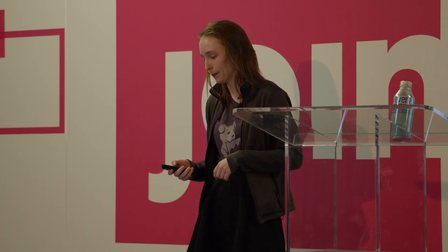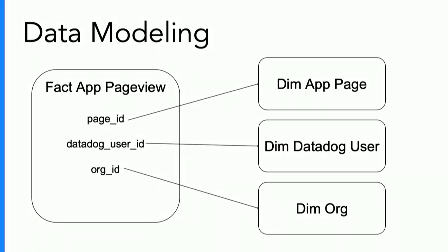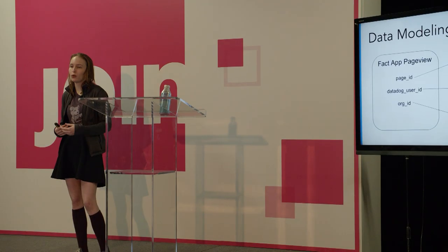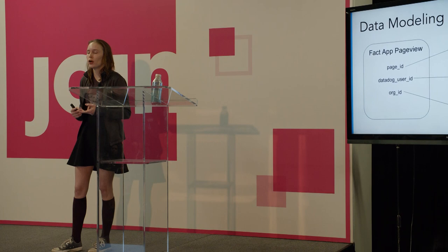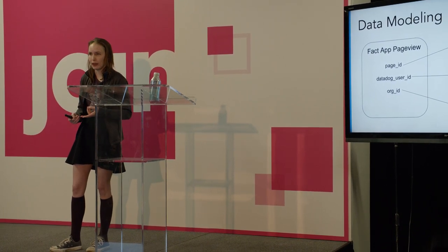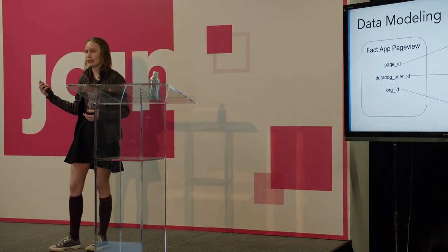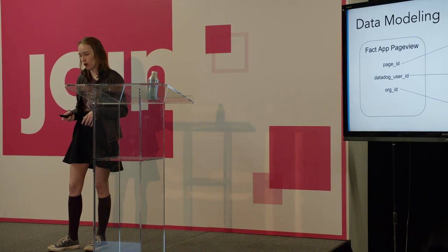In our data model we're using a pretty basic star schema. These fact tables have foreign keys that tie them to dimension tables showing static features of different parts of our dataset — details on the user, the page category, and the organization, which is our customer data. This makes it easy to filter by user geography or org billing plan by joining these extra tables.